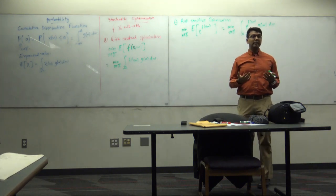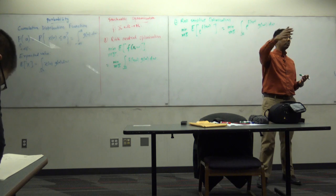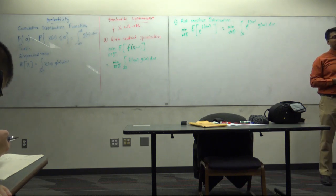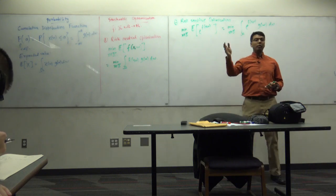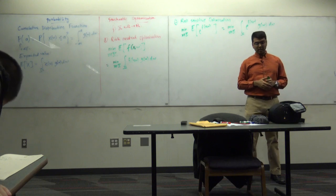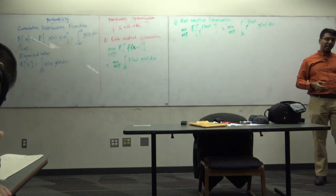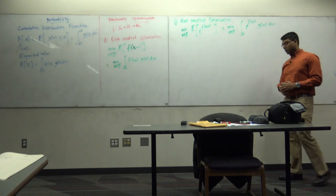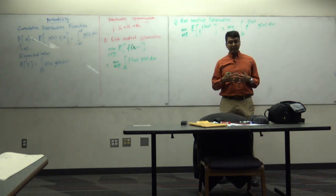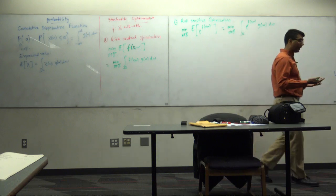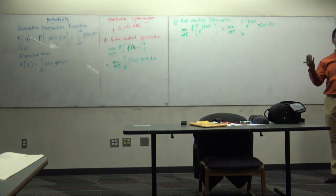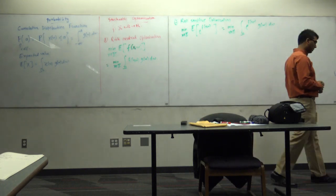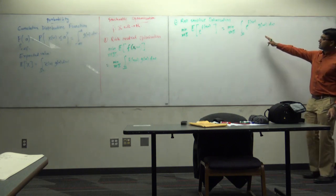Even though the probability of a generator failing or a transmitter burning up is extremely low, you still keep the power plant running all year and incur that cost, because failures do eventually happen somewhere. You don't want to risk lives in the hospital or lose running intensive simulations. You don't want to incur those losses, which is why you keep running these generators and incur the cost — that's the outcome of risk-sensitive optimization.